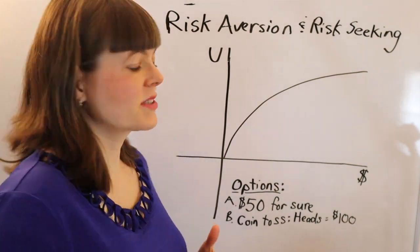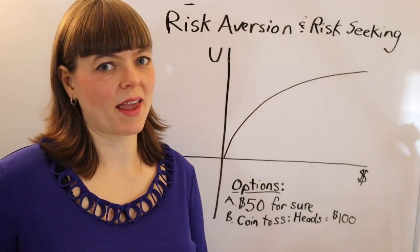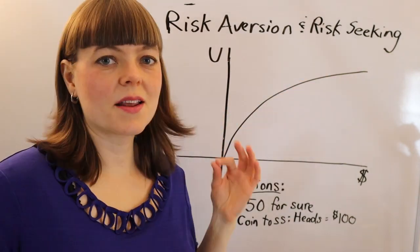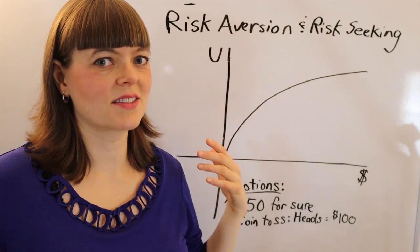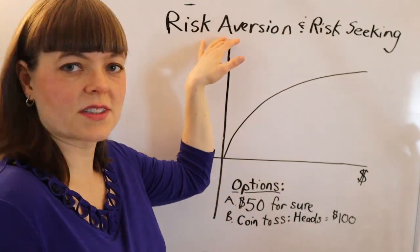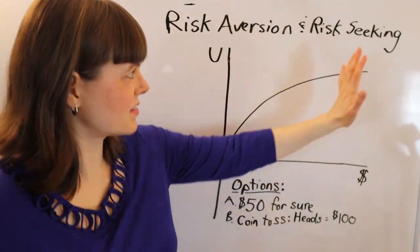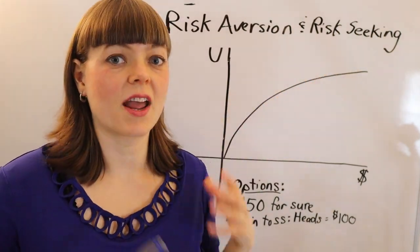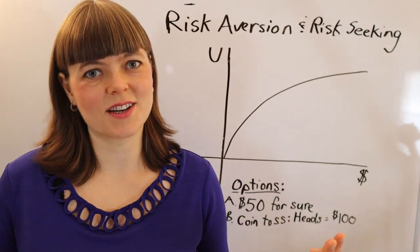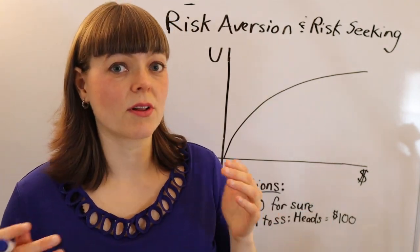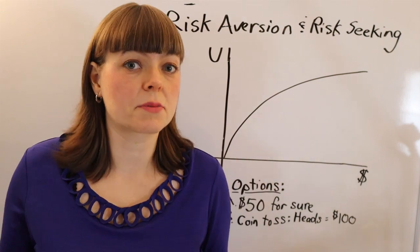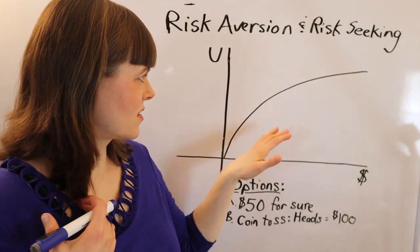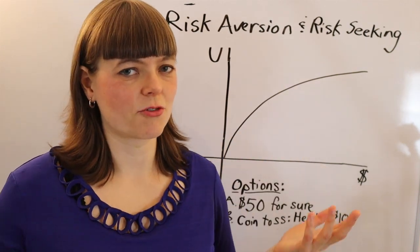In this video, I'm going to be talking about risk aversion and risk-seeking behavior and how that relates to the shape of the utility function. If we have a concave utility function shape, that's going to be associated with risk aversion. And if we have a convex utility function shape, that's going to be associated with risk-seeking behavior. This is really important to understand if you're going to understand insurance and why people avoid risk and will pay a little bit of extra money to make sure that they don't bear the burden of that risk.